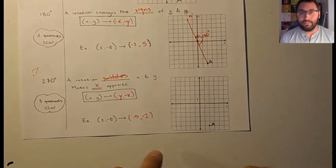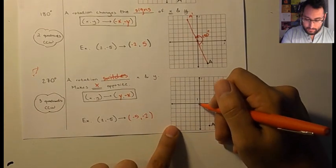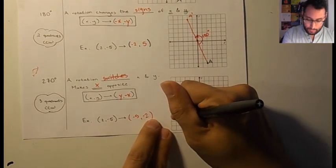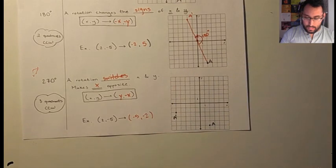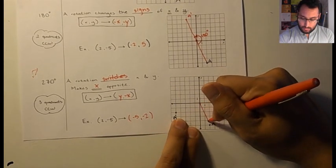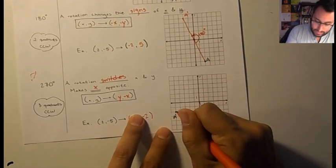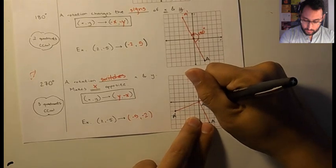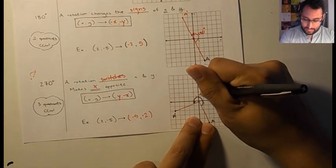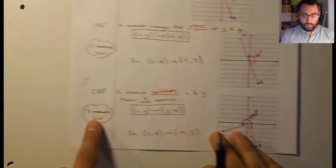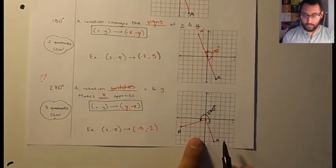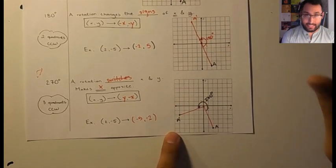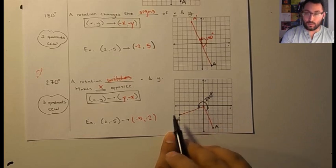So again, I already have the pre-image graphed. Graphing negative five, negative two, that's five to the left and then two down. So I'm going to put this in black. This is A prime. So I'm going to draw A to the origin and then A prime also to the origin. Remember, we're graphing counterclockwise. So right over here, this is 270 degrees. So right over here, it says three quadrants counterclockwise. So right now we're here. We go one, two, three.